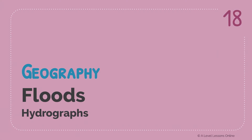Welcome back to A Level Lessons Online. We're back with Theme 1.2 covering floods today. The last topic we ended on was aeolian landscapes, so go check those out first as they are more conceptual and harder to understand. We're moving on to part 18 of our physical geography series on floods, specifically looking at hydrographs. In the next few parts we'll look at their causes and consequences, but in this part we focus on hydrographs and the various factors that affect them.